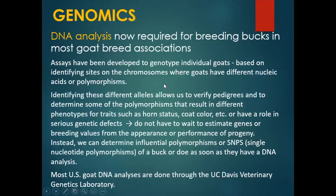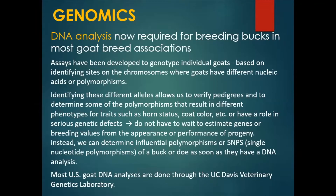Assays have been developed to genotype individual goats based on identifying sites on the chromosomes where goats have different nucleic acids or polymorphisms — essentially different alleles. An example of this would be the Mendelian traits of a wrinkled skin or round shape to a pea versus a smooth skin or oval shape to a pea.